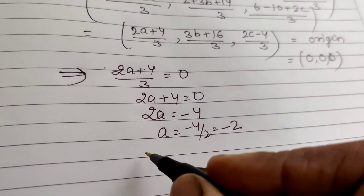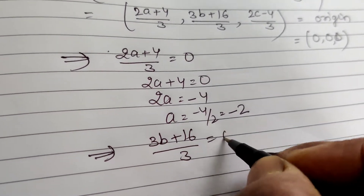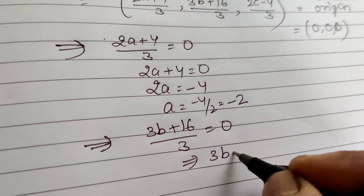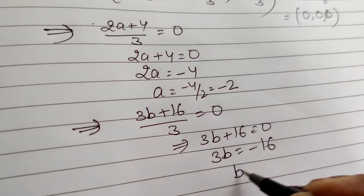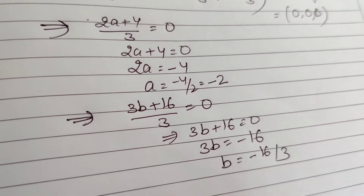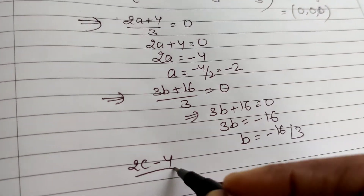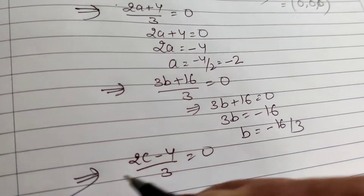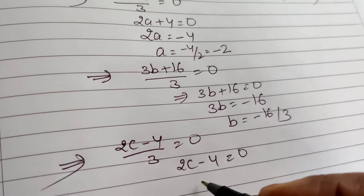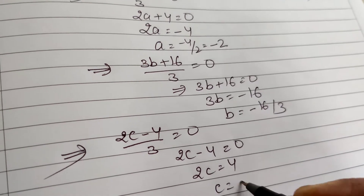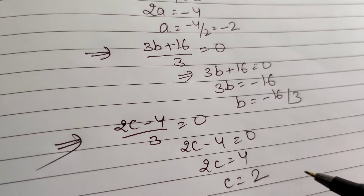From y: (3b + 16)/3 = 0, so 3b = -16, b = -16/3. From z: (2c - 4)/3 = 0, so 2c = 4, c = 2. Therefore the values of a, b, c are -2, -16/3, and 2.